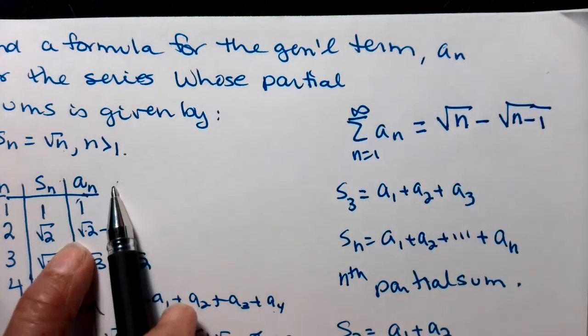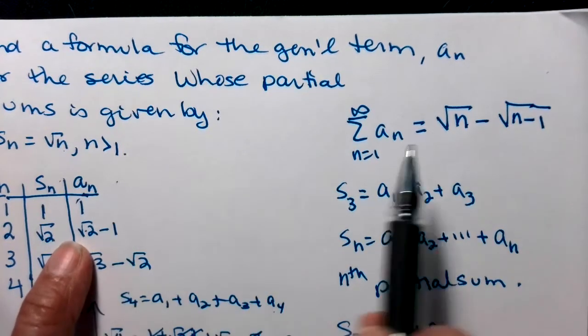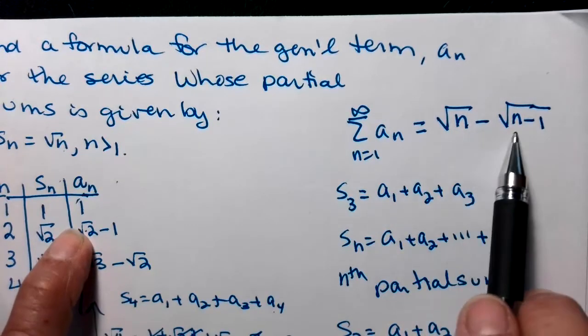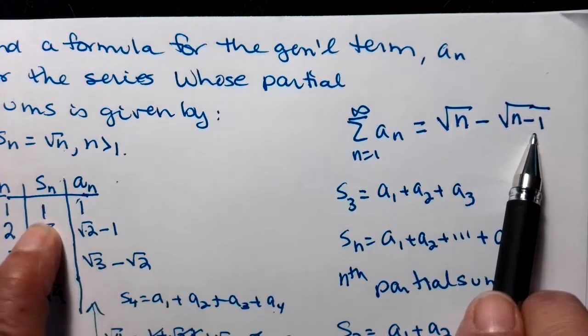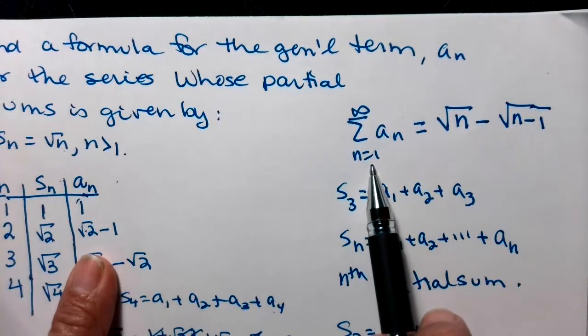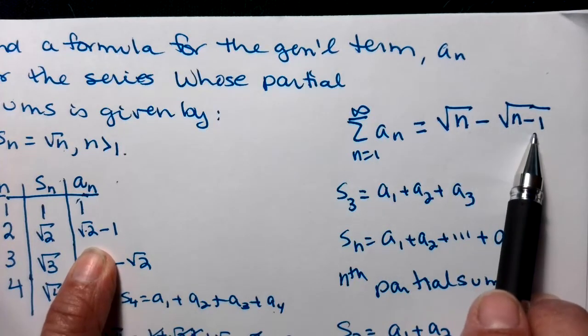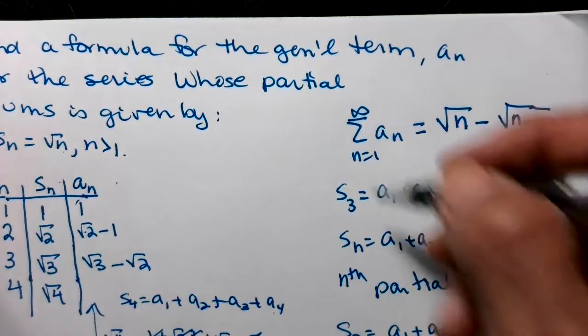So as long as n is greater than 1, if n is 1, I'll get square root of 1 minus square root of 0, that gives me the right place. If n is 2, I get square root of 2 minus 2 minus 1, which is 1. It looks good.